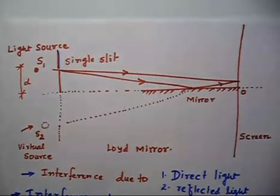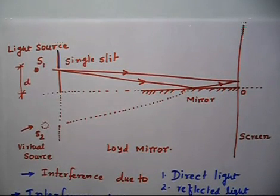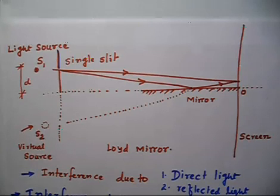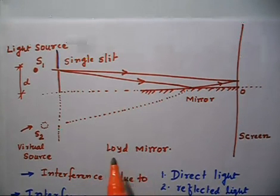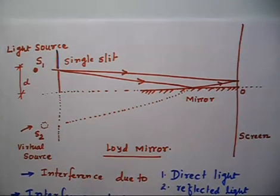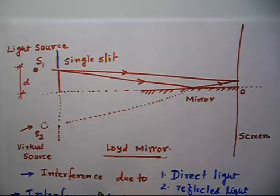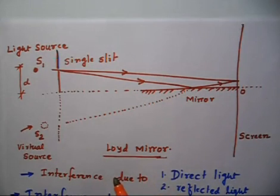Let us discuss this problem. This problem is related to interference, and this method by which we are doing interference is called Lloyd's mirror experiment. This experiment is named after Lloyd. So what we are doing in this experiment — let us draw the diagram and then we will discuss.